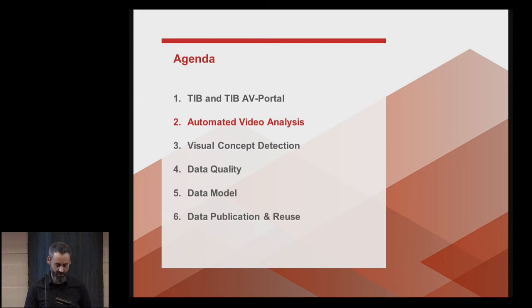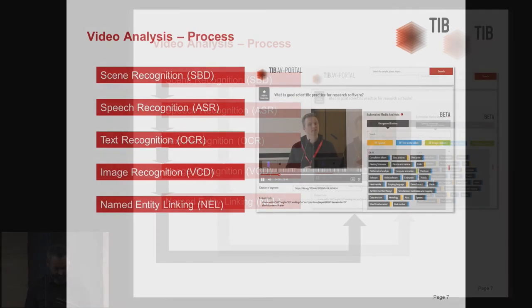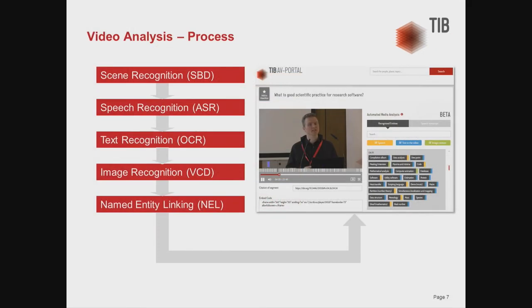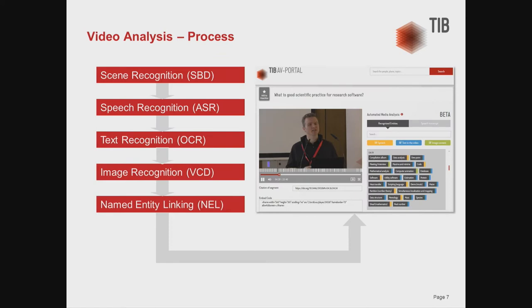Let's take a look at the metadata extraction process we are already using at the AV portal. This is what personally sets the AV portal apart. We have a process chain of five steps for each video that is uploaded. The goal is to extract descriptive metadata for each video automatically. The first step is shot boundary detection — a scene recognition — where we segment the videos into different scenes and extract keyframes for each scene, which are used later for preview.